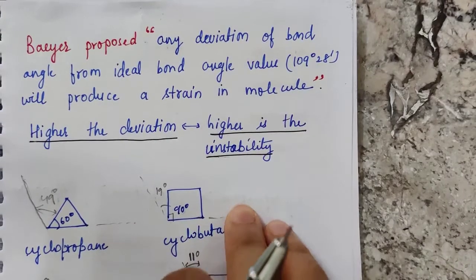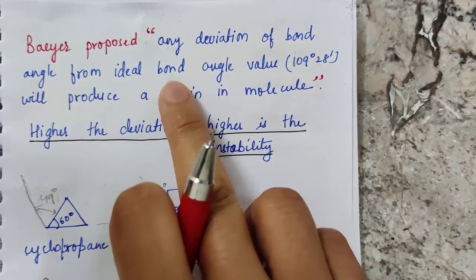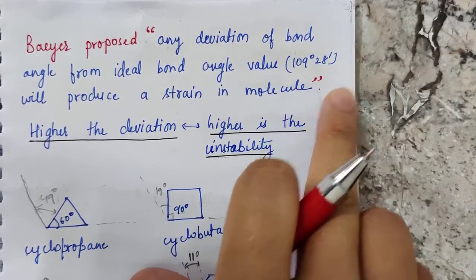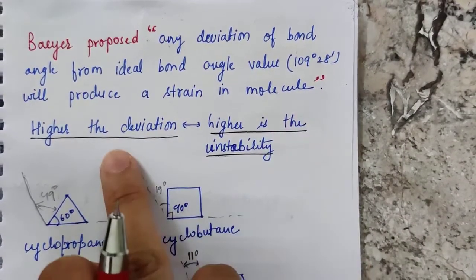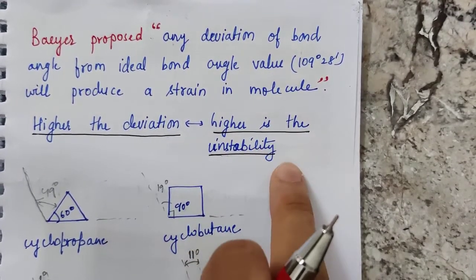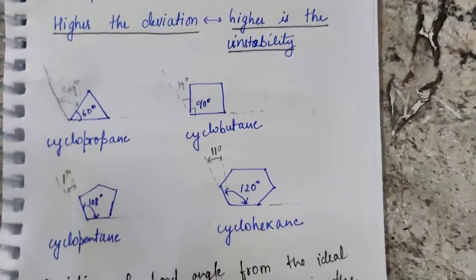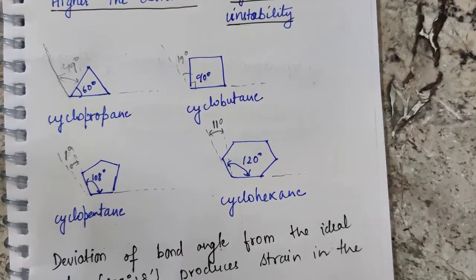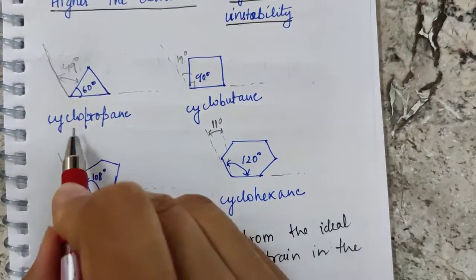Cyclopropane easily shows ring-opening reactions at room temperature because the overlap is not optimum, so the bond strength is less and stability is less, resulting in higher reactivity. Baeyer proposed that any deviation of bond angle from the ideal value of 109° 28' will produce strain in the molecule. Higher the deviation, higher will be the instability.